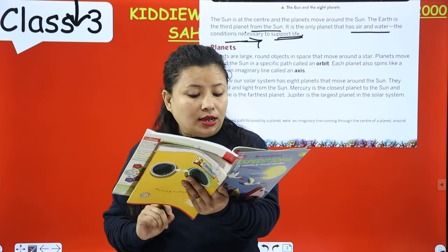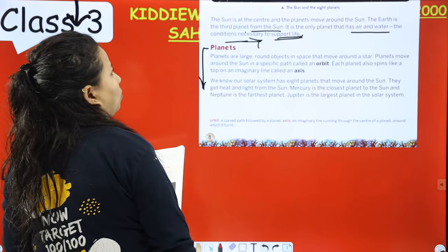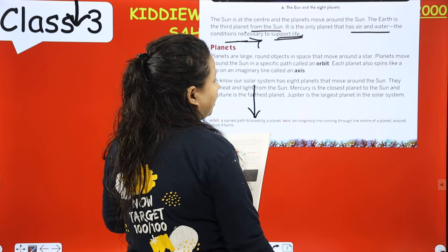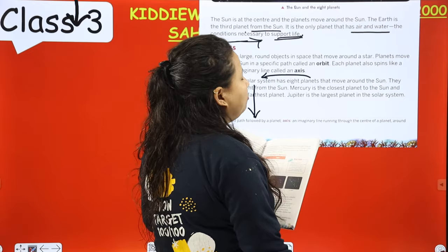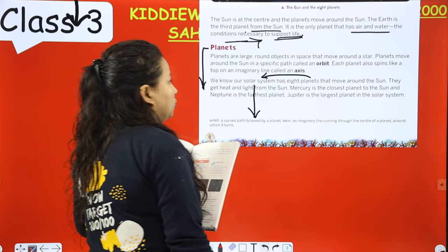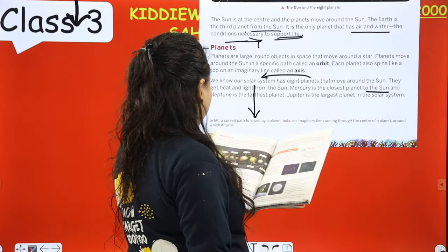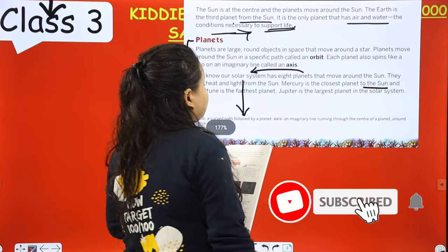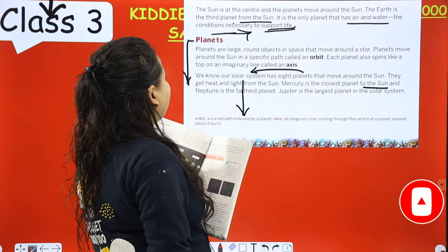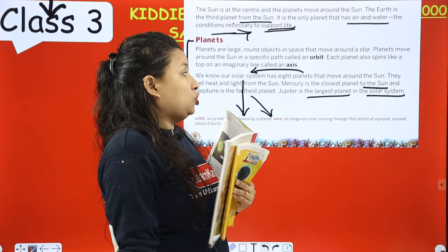We know our solar system has 8 planets that move around the sun. They get heat and light from the sun. Mercury is the closest planet to the sun, and Neptune is the farthest planet. Jupiter is the largest planet in the solar system.